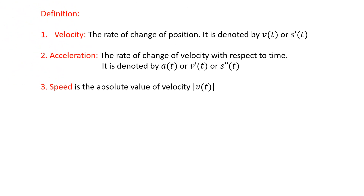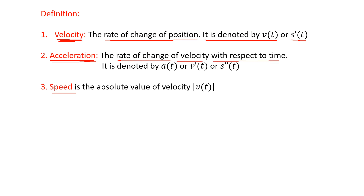Let us define the meaning of velocity, acceleration, and speed. Velocity is nothing but the rate of change of position of a particle or an object. It is usually denoted by v(t), or s′(t) — that is, the first derivative of the position function. Acceleration is nothing but the rate of change of velocity with respect to time. It is denoted by a(t), or v′(t), or s″(t) — that is, the second derivative of the position function.